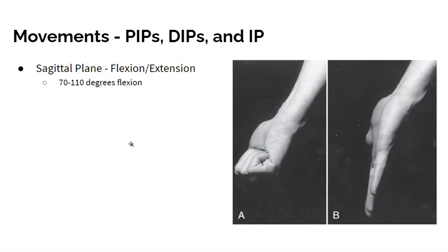Finally, you have your IP joints - interphalangeal, proximal and distal. Your thumb only has one. These can flex and extend in the sagittal plane about the medial-lateral axis.